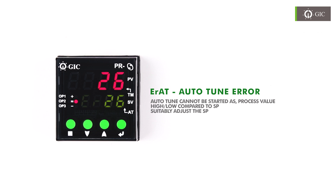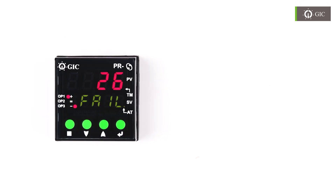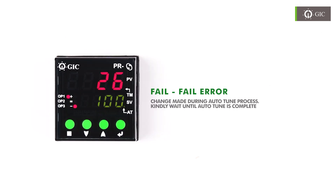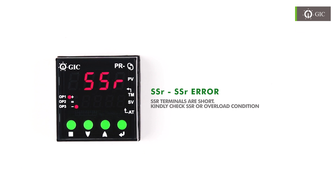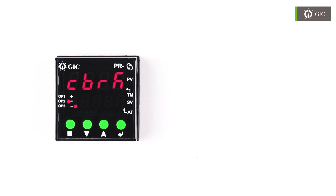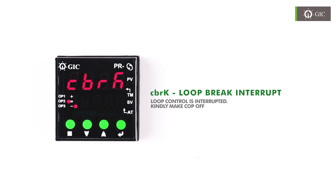Suitably adjust the SP. ER80 stands for auto-tune error — that means auto-tune cannot be started because the process value is too high or too low as compared to SP. Failed stands for fail error — that means an attempt was made to change the settings during the auto-tune process; kindly wait until auto-tune is complete. SSR stands for SSR error — that means SSR terminals are short; kindly check SSR or overload condition. CBRK stands for loop break interrupt — that means the loop control is interrupted; kindly make COP off.